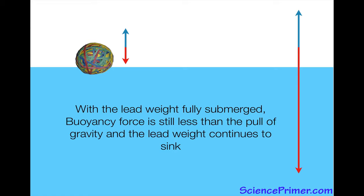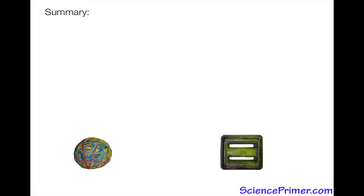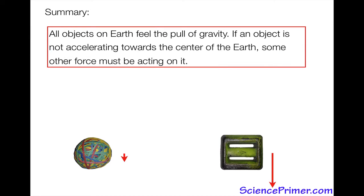So now we can answer our two questions, at least qualitatively. There's still some math we can do, but from a conceptual perspective, we start with the idea that all objects on Earth feel the pull of gravity. If an object is not accelerating towards the center of the Earth, it means some other force is acting on it.